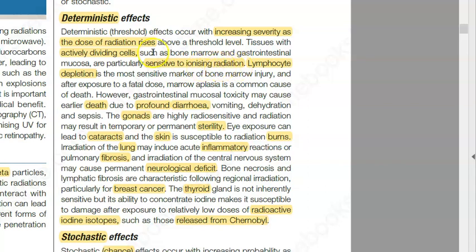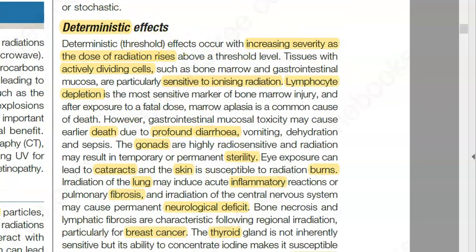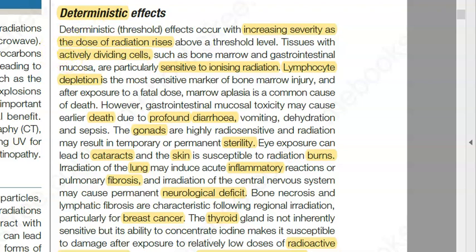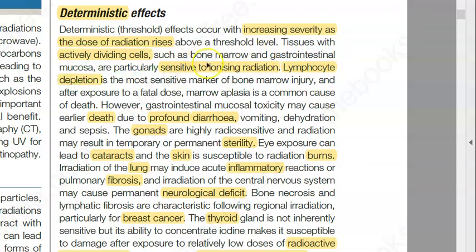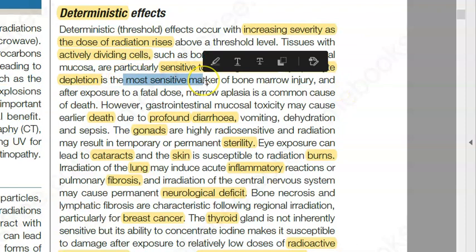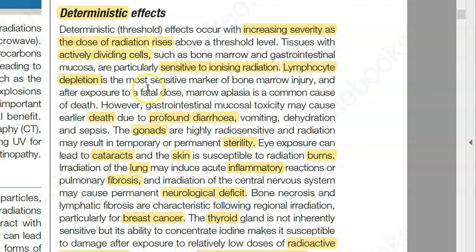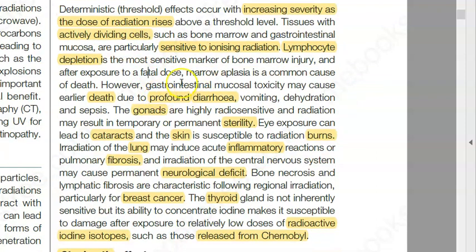When exposed to ionizing radiation, the actively dividing cells in your body are most sensitive. These include bone marrow — which is making RBCs, WBCs, and lymphocytes — and GI mucosa, which is always regenerating. If bone marrow is affected, there will be lymphocyte depletion, which is a sensitive marker. If GI mucosa is affected, you'll have profound diarrhea, vomiting, dehydration, sepsis, and then death can occur.